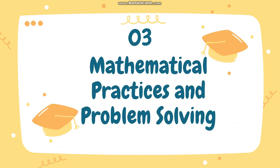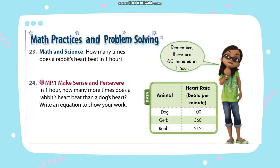Now let's proceed to mathematical practices and problem solving. How many times does a rabbit's heart beat in one hour? The rabbit's heart rate is 212 beats per minute. Since 60 minutes is equivalent to one hour, we simply multiply 212 by 60. That is 12,720.